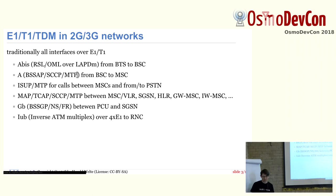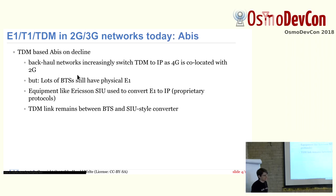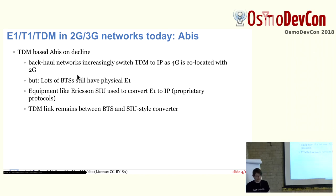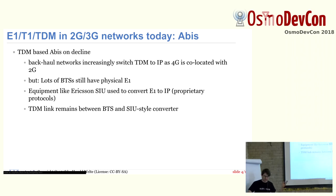So we have E1 everywhere in classic GSM architecture, though today on the ABIS side it's much on the decline. If you have an existing 2G site, you put a 3G or 4G cell at the same site with Ethernet backhaul for LTE, and you don't want both E1 and Ethernet there because that doubles the line and infrastructure cost. But lots of BTSs still have physical E1 — not just old 90s equipment, but even recent Ericsson 2G equipment from a few years ago still only had E1 as a backhaul option.